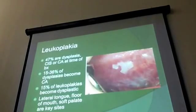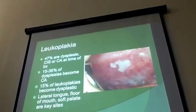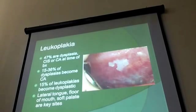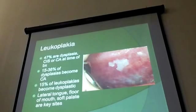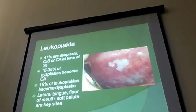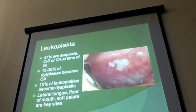We'll go on to squamous dysplasias and leukoplakia. This is the most common reason for an oral biopsy — a white lesion — and this is in the most characteristic location, right on the lateral margin of the tongue. This is a high-risk location for dysplasia and for squamous carcinoma, so that's always an important site to examine. A high proportion already have dysplasia or carcinoma present when you see leukoplakia at the time of biopsy.